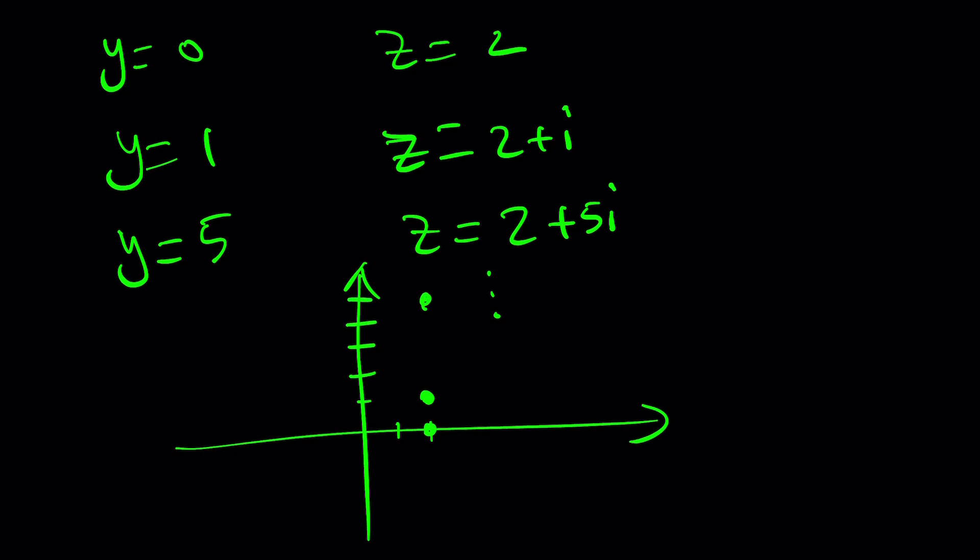Have you noticed that all these numbers are on the same vertical line, which is the locus, which is the curve, which in this case, it happens to be a straight line, but this would be the solution. So all complex numbers, the solutions to this equation, the real part of z bar minus i equals 2, would be on this straight line, on this vertical line. And this brings us to the end of this video.